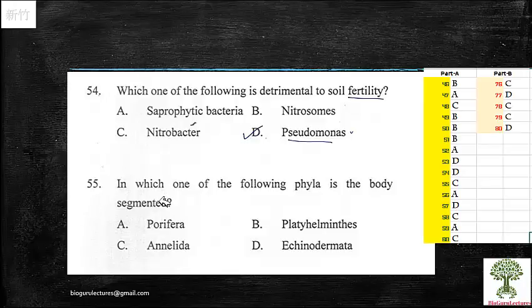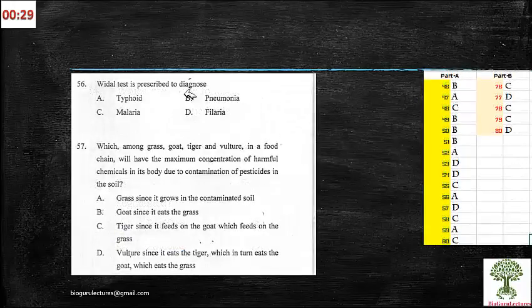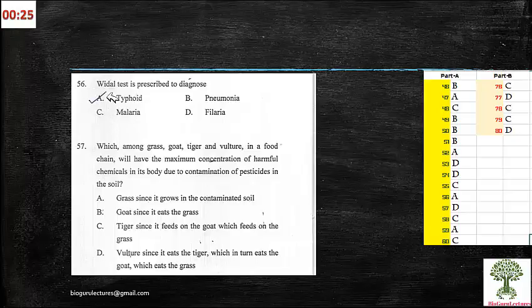Next, 55th one: in which one of the following phyla is the body segmented? Simple, it's annelids. Next, 56th one: Vidal test is prescribed to diagnose. It's one of the ancient questions. I can say all exams you can come across is typhoid.